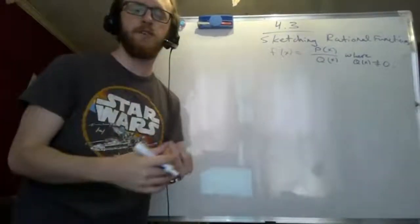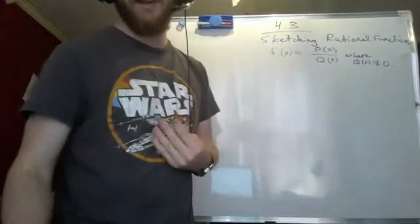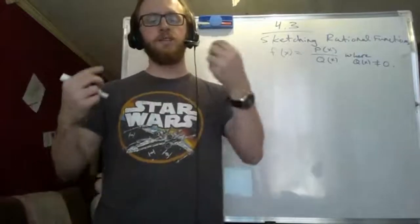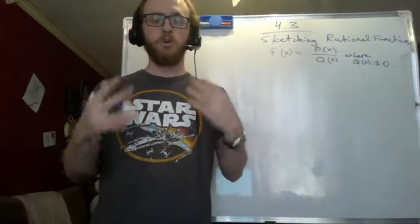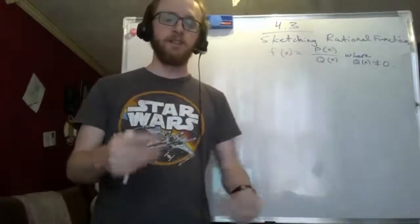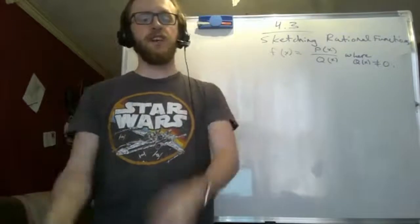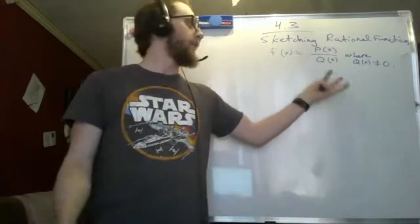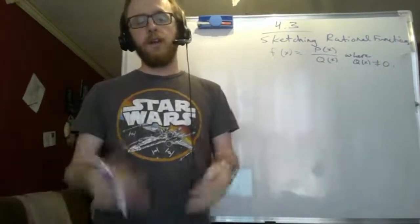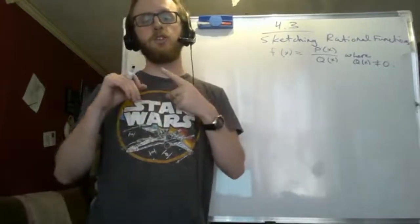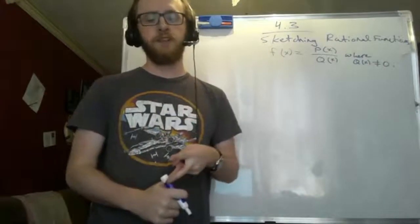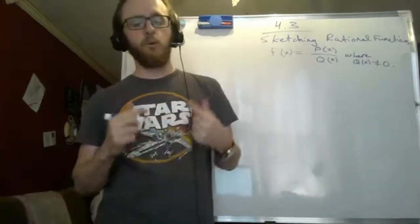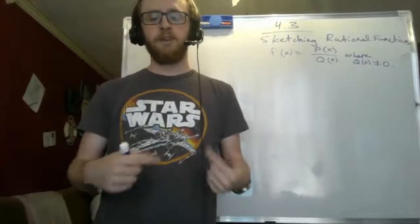In terms of the steps — in the previous video I gave you a list of 8 steps for how to sketch these functions — those same 8 steps are going to work here as well. The only difference is that because we're dealing with a fraction, we now have to start talking about vertical asymptotes, horizontal asymptotes, and what are called oblique asymptotes. We haven't talked about oblique asymptotes yet in this class, but that'll be part of today's lecture.